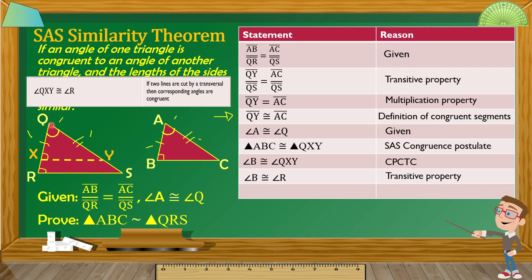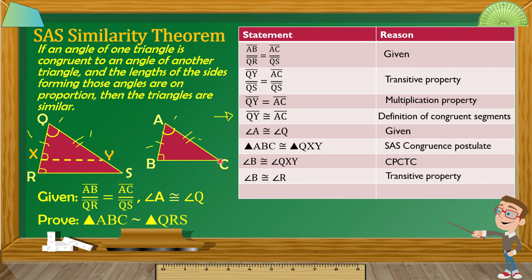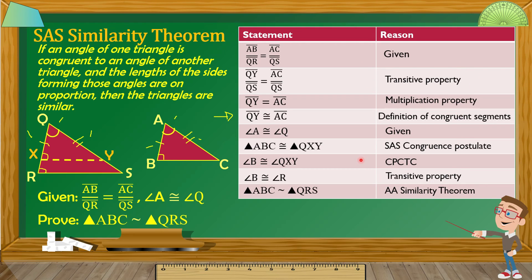We have now proved our goal. We are proving that triangle QRS and triangle ABC are similar. We have angle Q congruent to angle A (given), and we proved that angle R is congruent to angle B. Therefore, triangle ABC is similar to triangle QRS by the AA Similarity Theorem. Although the proof has many statements and reasons, this confirms that the SAS Similarity Theorem statement is true, and we can now use this theorem in other proofs.